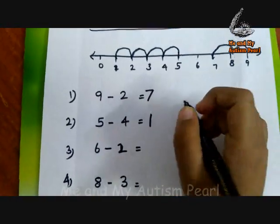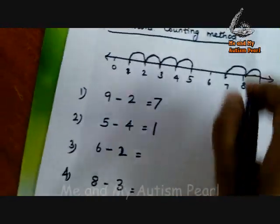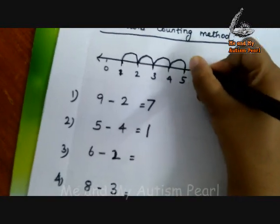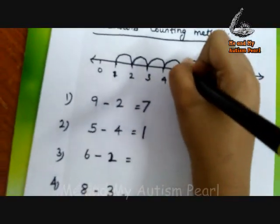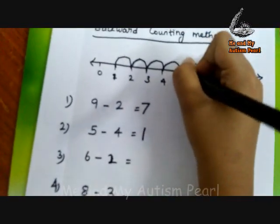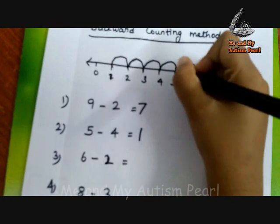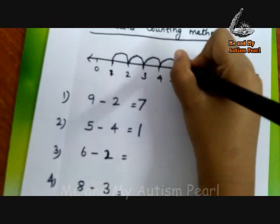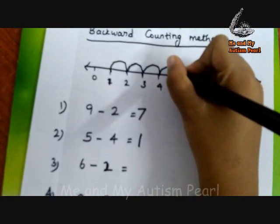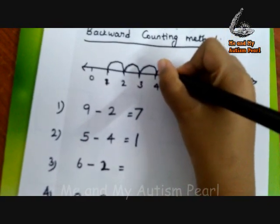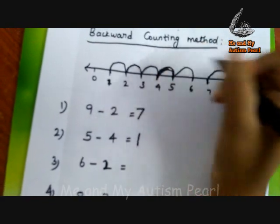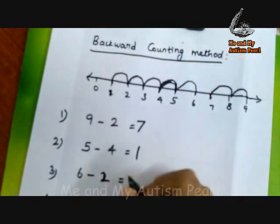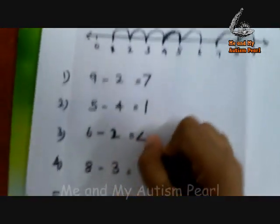Six minus two. Six minus one is equal to five. Six minus two is equal to four. Ok, four.